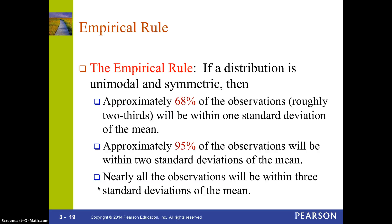The empirical rule says that about 68% of the observations will be within one standard deviation of the mean. 68% is actually a lot of the data within one standard deviation of the mean. 95% will be within two standard deviations of the mean, and then nearly all the observations will be within three standard deviations of the mean.